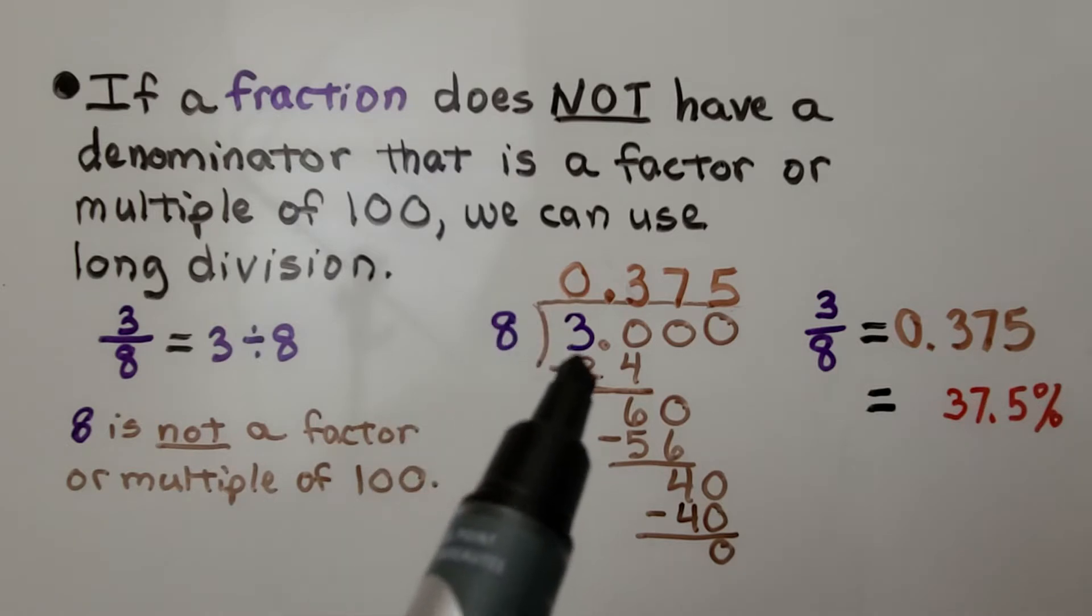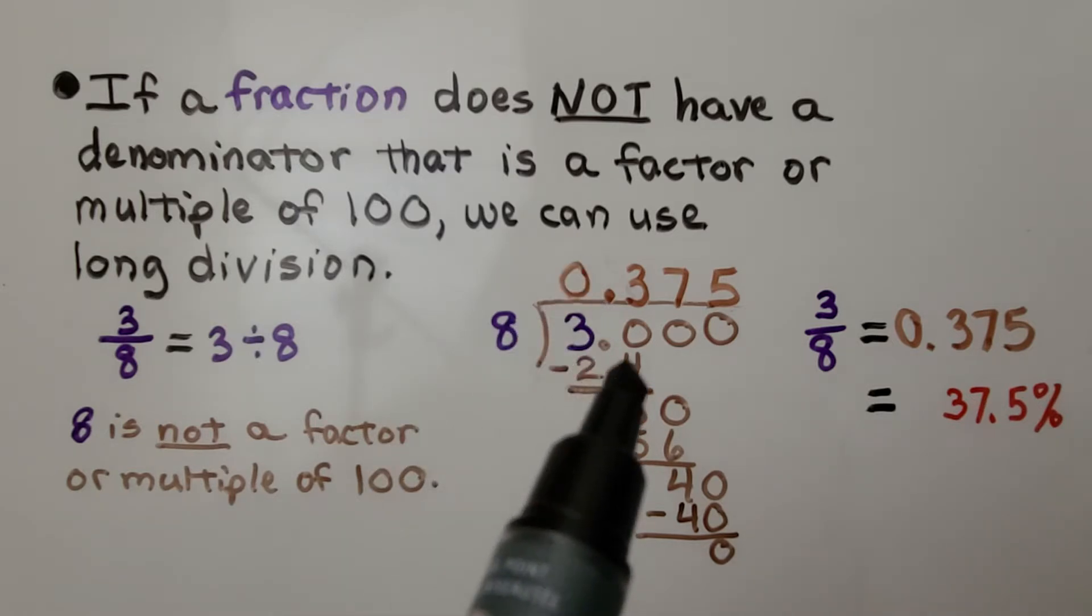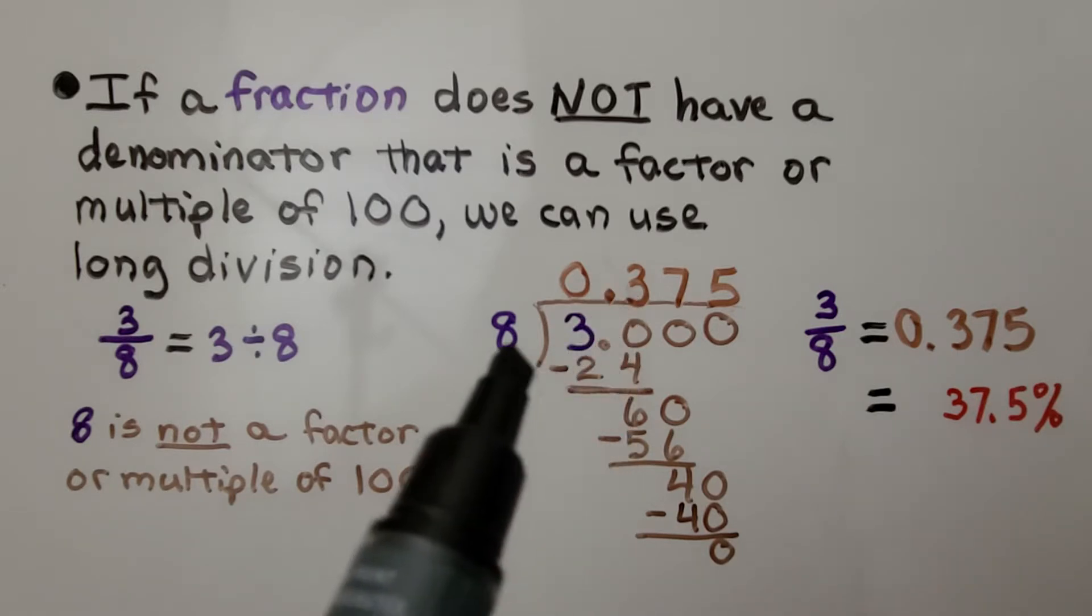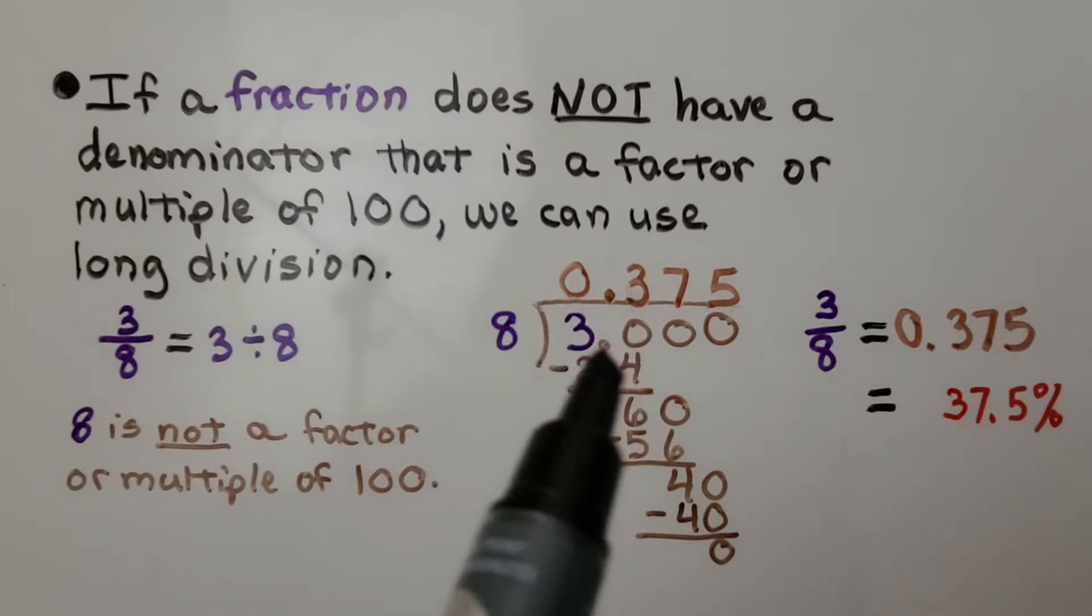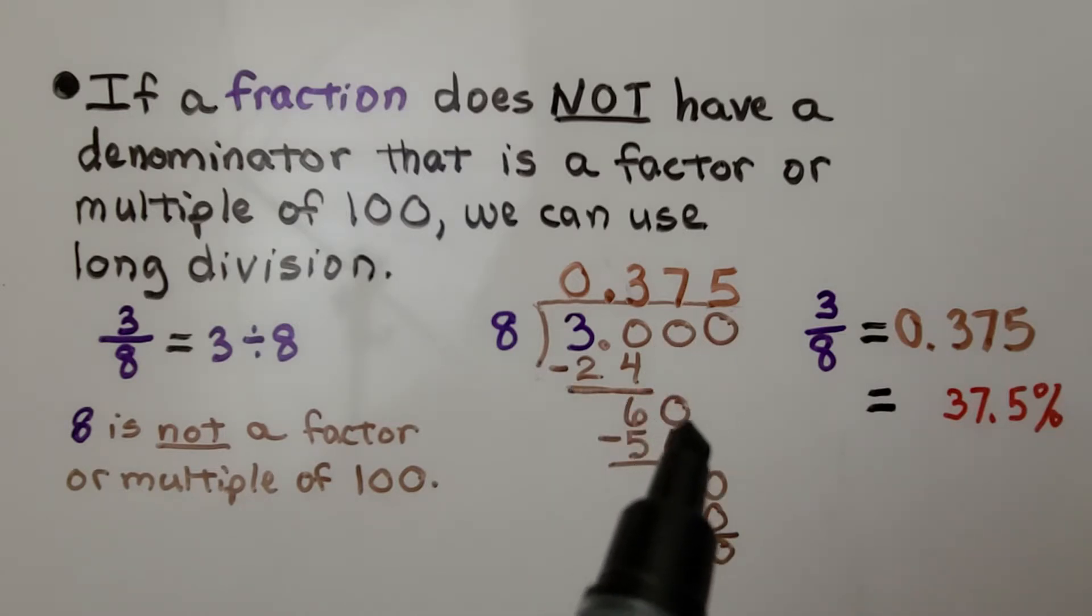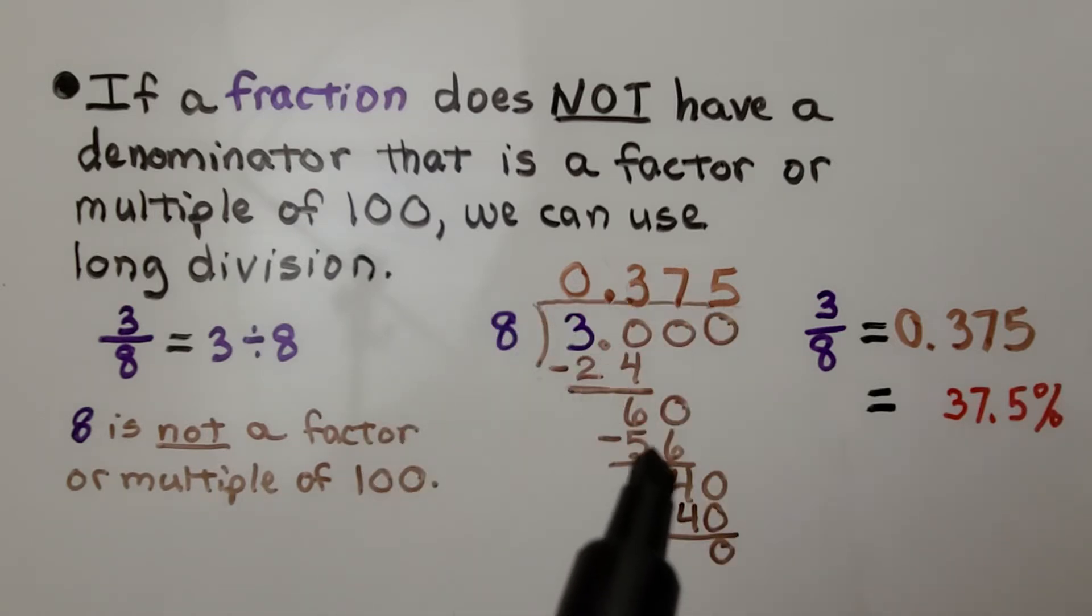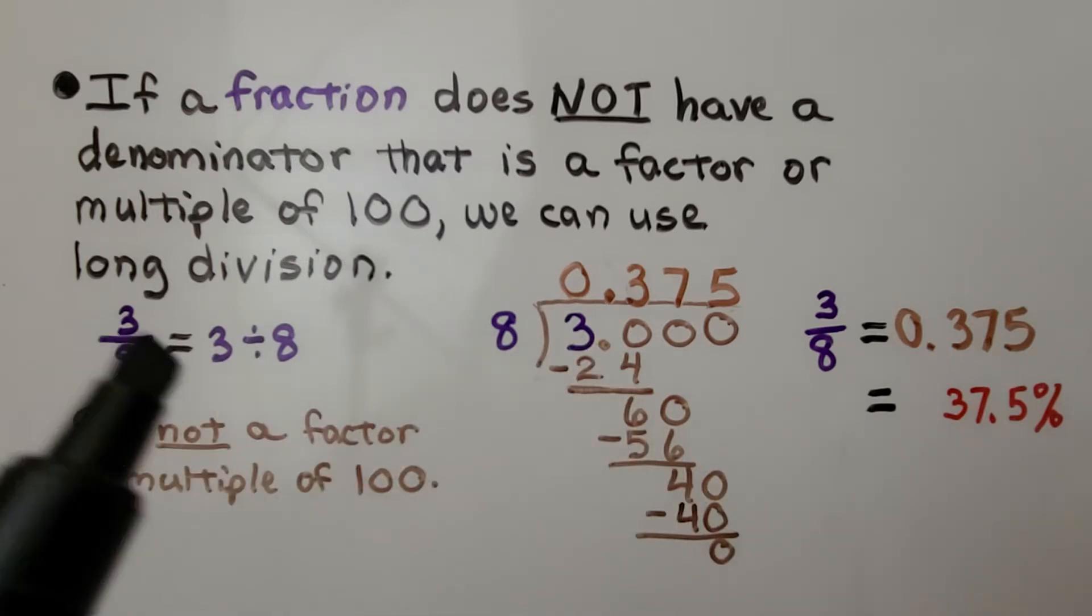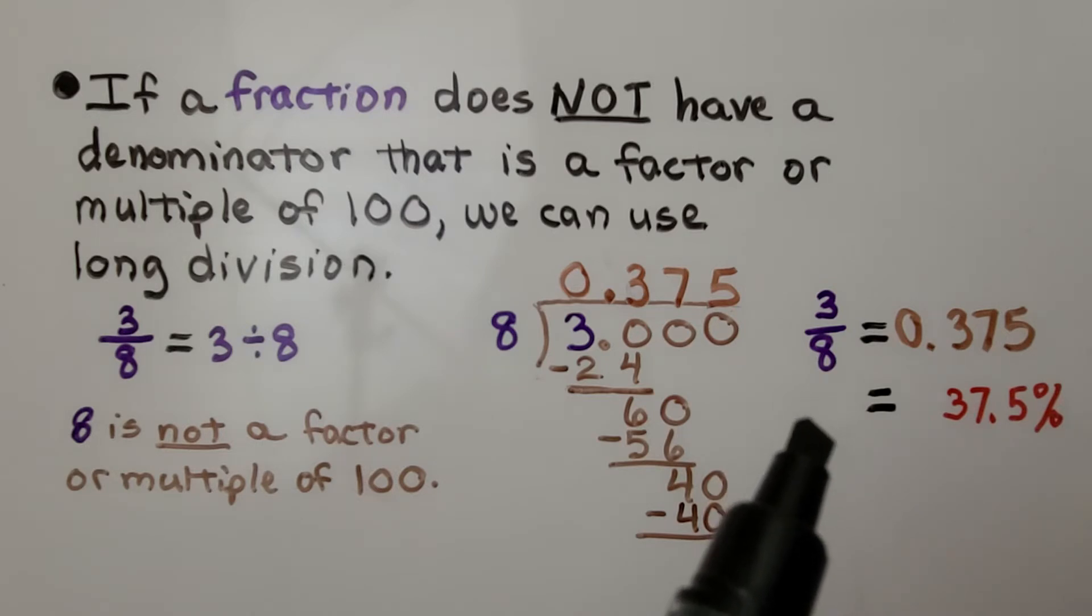8 cannot fit into 3, so we write a 0 in the quotient. We add a decimal point, which goes straight up. How many times can 8 fit into 30? That would be 3 times, because 8 times 3 is 24. We subtract and get a 6. Bring another 0 down. 8 fits into 60, 7 times. 8 times 7 is 56. We subtract that and get a 4. Bring another 0 down. 8 fits into 40, 5 times, which gives us a remainder of 0.